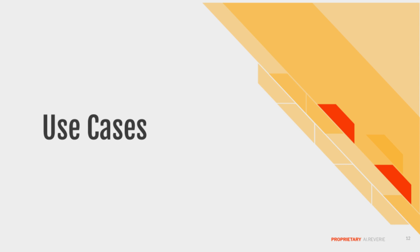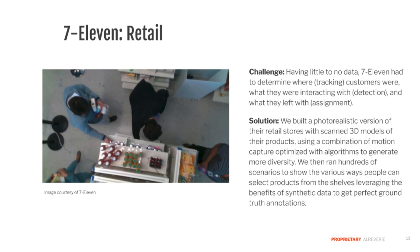I'm going to focus now on some interesting use cases with companies and organizations we've enjoyed working with. In the retail space, we worked with 7-Eleven to help build their computer vision around cashierless stores, which requires a sophisticated use of algorithms to track and monitor individuals along with the items they're about to purchase. When they started this project, they had a huge data scarcity problem, and the annotations they were looking for — such as skeletal annotations of people's poses — were a challenging and labor-intensive process to annotate, and quite expensive. On the left is an image of an early prototype of the kind of data they were working with.